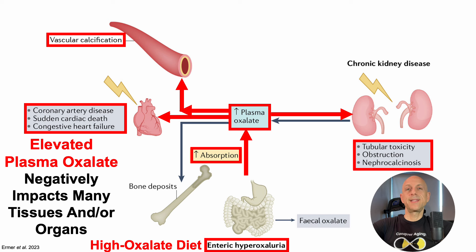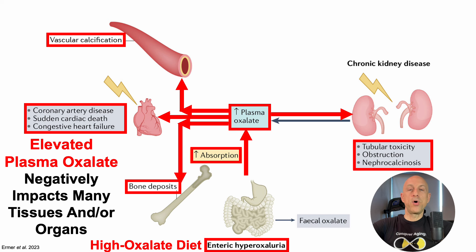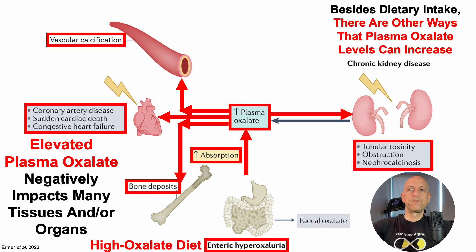To make matters worse, elevated plasma oxalate can lead to a buildup of oxalate in tissues, including bone, but also the thyroid gland, lung, and spleen.